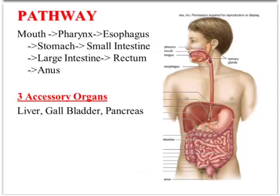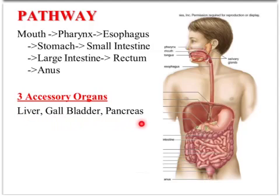Here's a quick overview of the pathway that food takes as it travels from your mouth, where your teeth grind it up, into your pharynx at the back of your throat, down your esophagus, and into your stomach. From your stomach, it moves into your small intestine, then into your large intestine, and finally into your rectum and out your anus. There are also three accessory organs, discussed in the second vodcast, that assist the digestive system.